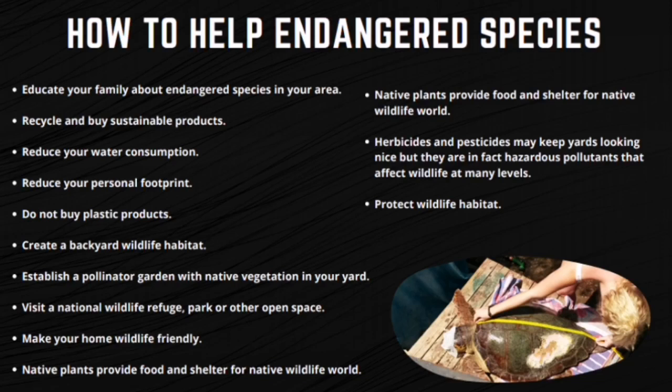For those with a backyard or garden, create a backyard wildlife habitat. Put up bird feeders and other wildlife attractants, birdhouses, and bat boxes. Insects are also important for the environment, so establish a pollinator garden with native vegetation in your yard — attracting native insects like bees and butterflies can help pollinate your plants. But avoid planting invasive species, as non-native plants can overtake and destroy the native species on which animals depend.